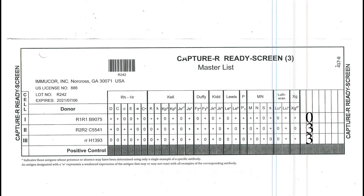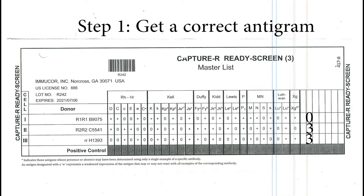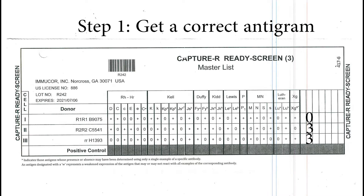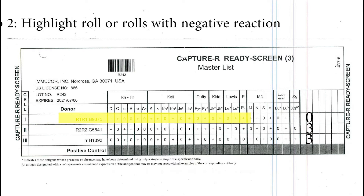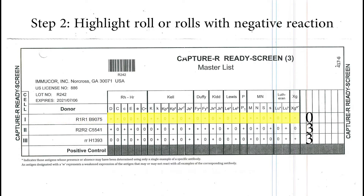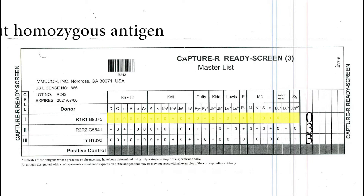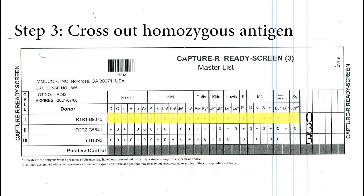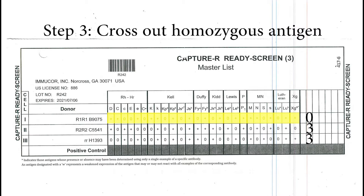The antibody screen results for our patient is 0, 3, 3. We are going to follow the same steps as previously discussed. Step 1: get the correct antigram — it is a critical step. Step 2: highlight all the rows with negative reactions. This step may not be necessary once you become more familiar with it; it just makes crossing out easier.